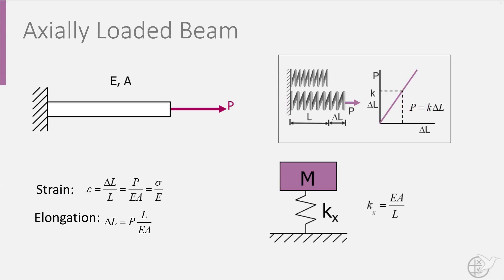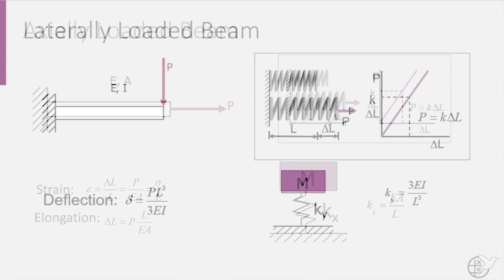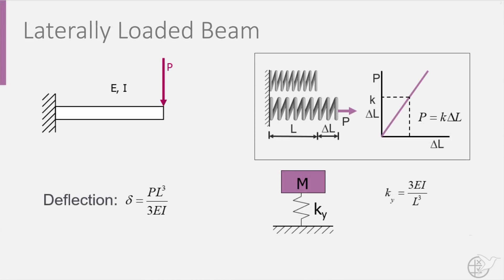We define one system in the axial direction and one in the lateral direction, each with their corresponding stiffness kx and ky. For an axially loaded beam, the spring stiffness k equals the modulus of elasticity times the cross-sectional area over the length of the beam. For a laterally loaded beam, its lateral or bending stiffness is defined as three times the bending stiffness EI over the length of the beam cubed, where E is the modulus of elasticity and I the principal moment for bending.